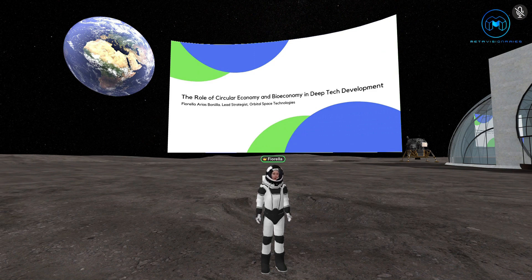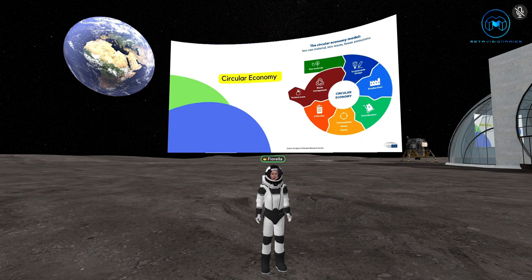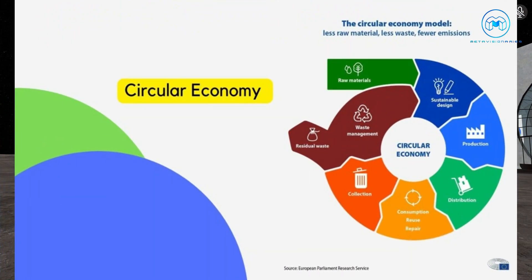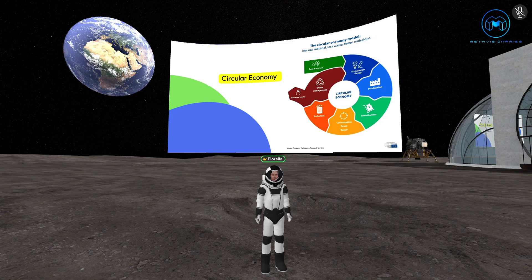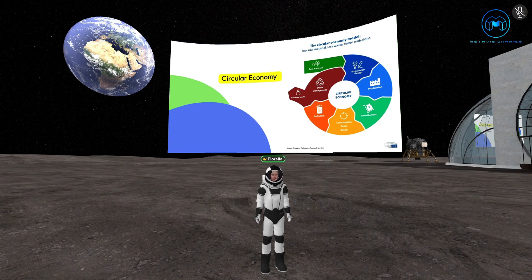Circular economy is a concept about making less waste, using less raw materials, and producing fewer emissions. We start by obtaining raw materials, think about design, production, distribution, and consumption. Once the user is done with a product, we need to think about waste management. Circular economy wants everyone to not rely so much on raw materials, but on reusing, recycling, and repurposing waste generated throughout the production process.